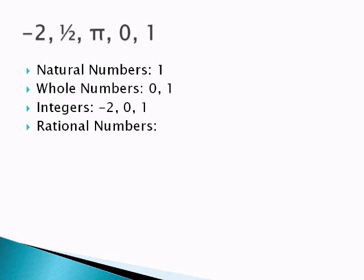Next are the rational numbers. These are numbers that can be written as a fraction. So this is going to include the 1 half and all the integers as well, because we can just put them over 1 and they suddenly become a fraction or a rational number.